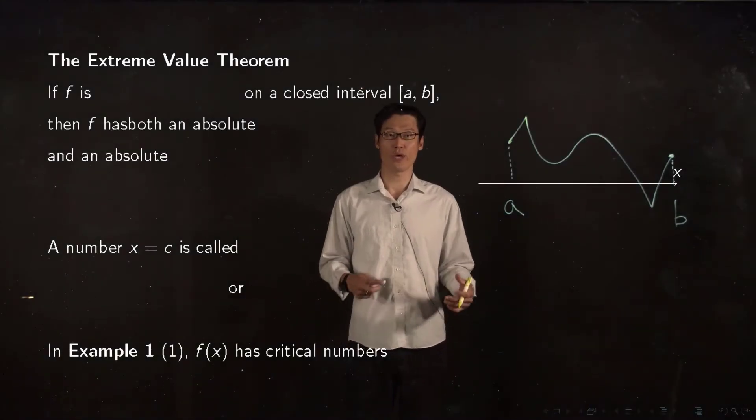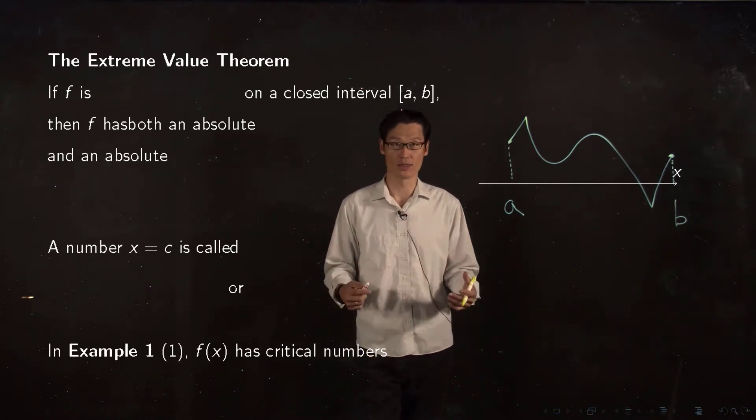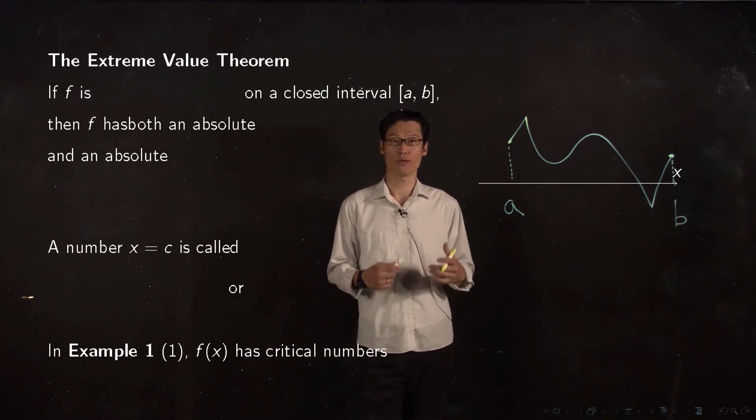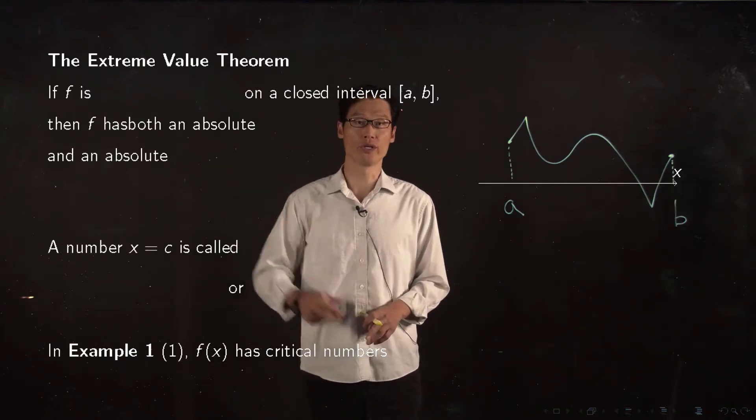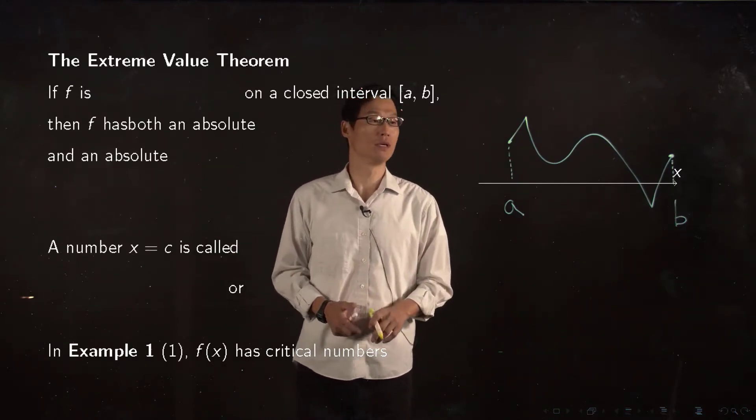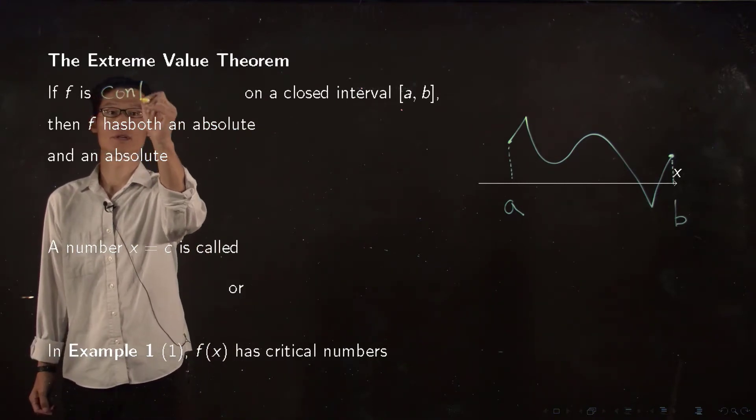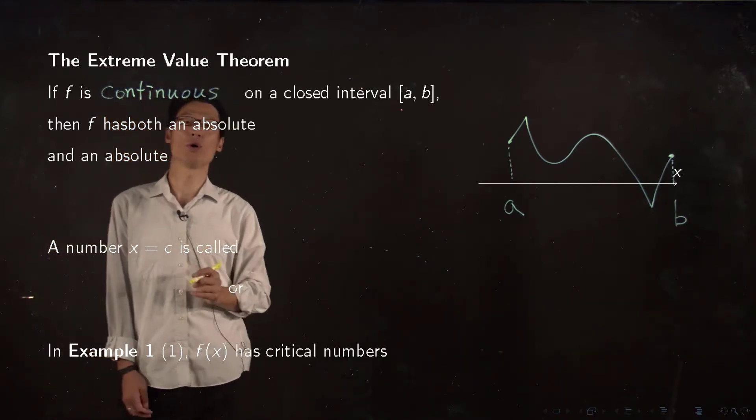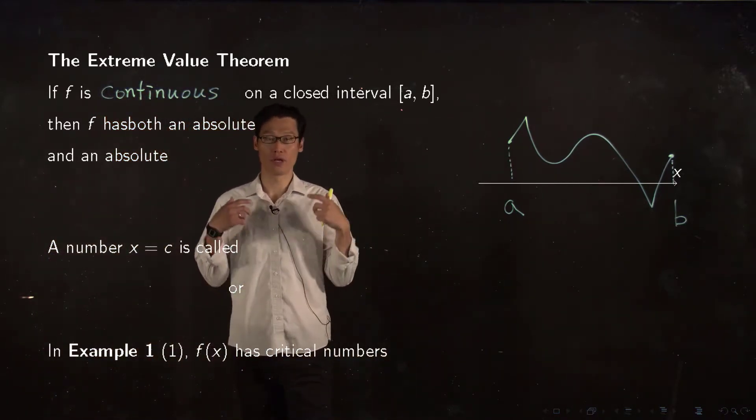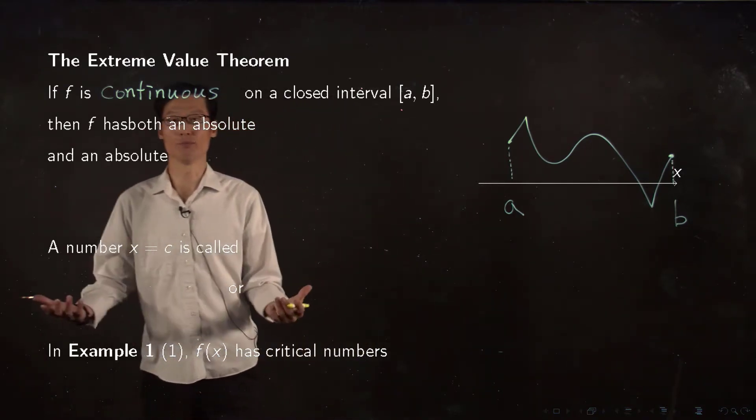All right, so we are ready to answer the previous question asking when a function has both absolute maximum and minimum. The condition is continuity together with closed interval. So if your function is continuous on a closed interval, then you can always say your function has both absolute maximum and minimum.